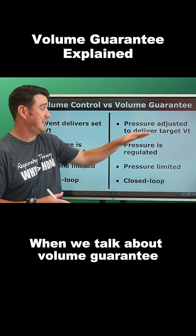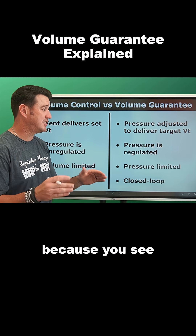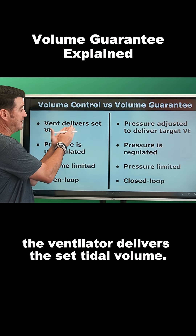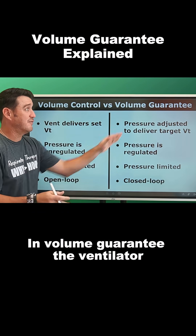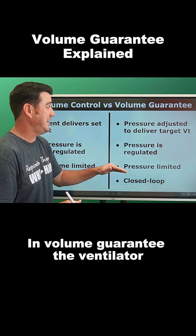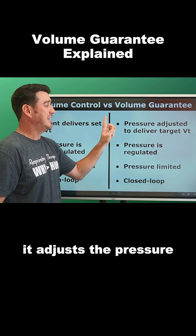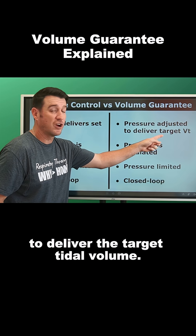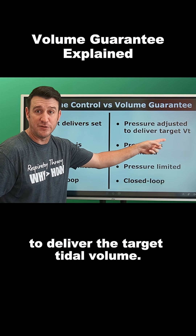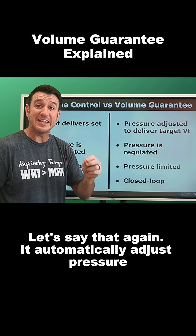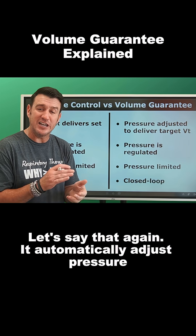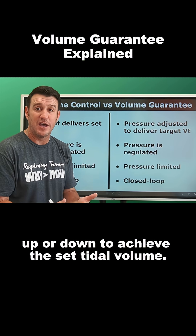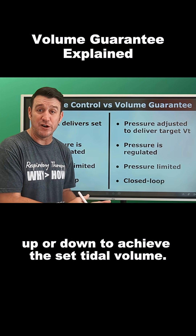When we talk about volume guarantee, the first thing we notice is in volume control, the ventilator delivers the set tidal volume. In volume guarantee, the ventilator adjusts the pressure to deliver the target tidal volume. It automatically adjusts pressure up or down to achieve the set tidal volume.